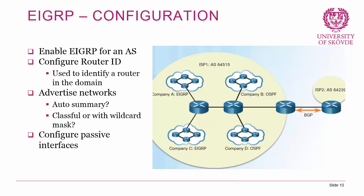Before getting practical, let's look at the configuration steps. EIGRP is an interior routing protocol configured per autonomous system — each autonomous system has its own EIGRP instance. The first thing to configure is a router ID, which uniquely identifies a router in the domain. Then you advertise networks, considering whether to use auto-summary.